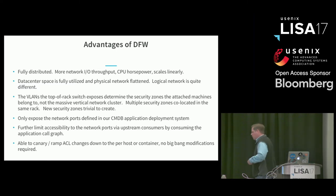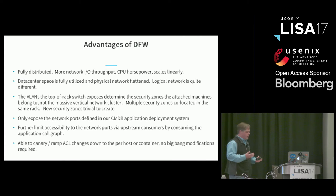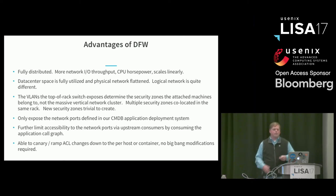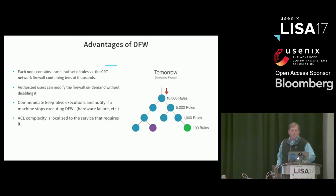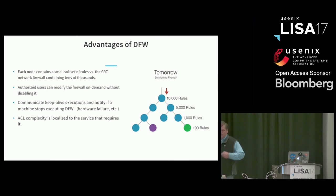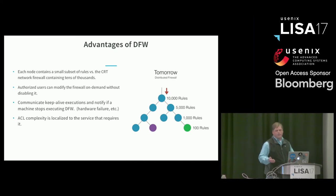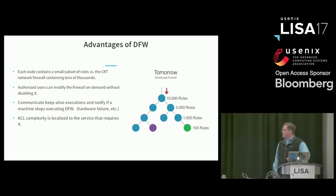We import what we call the call graph. LinkedIn has thousands of applications interconnecting in millions of ways, but at the per-application level it's actually quite limited — maybe a database only has five or ten upstream consumers. We want to limit applications to only respond to those. This simplified things considerably: the CRT had tens of thousands of ACLs, but shifting that logic down to the per-node level makes each node quite simple. We're seeing fewer than a hundred rules in production.